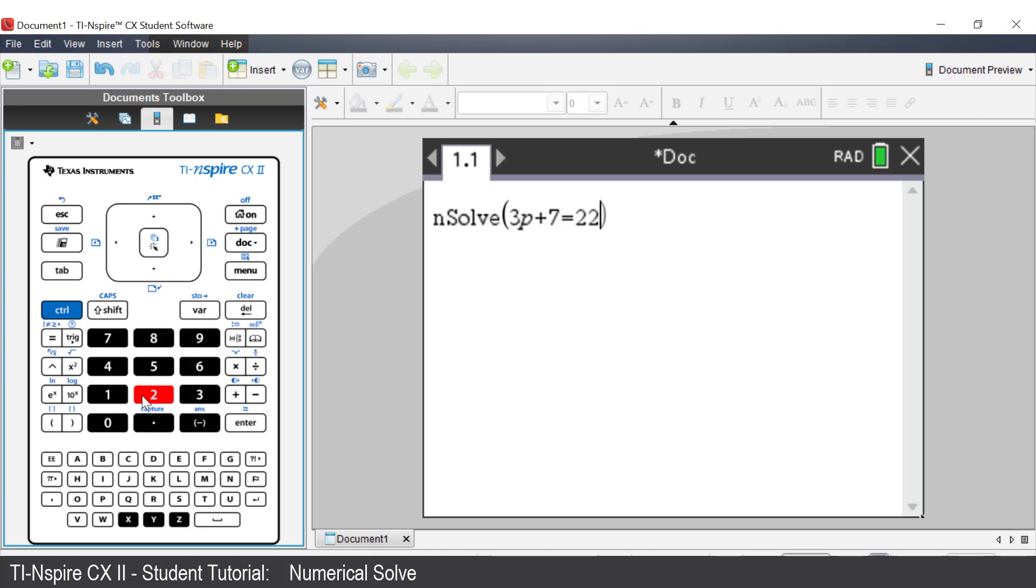As you're solving the equation with respect to the unknown p, a comma, then p is required. Pressing Enter and the solution is 5.